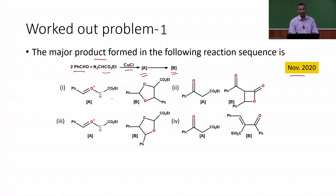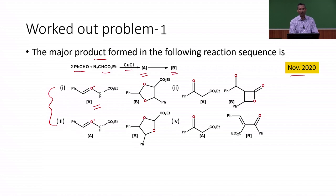Four sets of combinations are given. In options 1 and 3, a ylide-like derivative is given and the final product has oxazolines with slightly different positions. In options 2 and 4, a beta-keto ester is given and the final product is either a cyclic lactone or an enone. We are going to find out how the reaction actually proceeds.